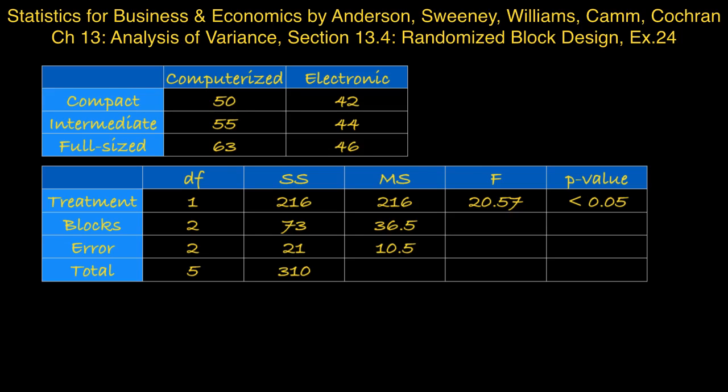Next, moving on to the treatment sum of squares. Again, using the formula in the textbook, this time we need to use the treatment means, and the mean of the three computerized readings is 56, and the mean of the three electronic readings is 44. And we use those two values together with the overall mean in the formula to calculate the treatment sum of squares, which comes to 216.